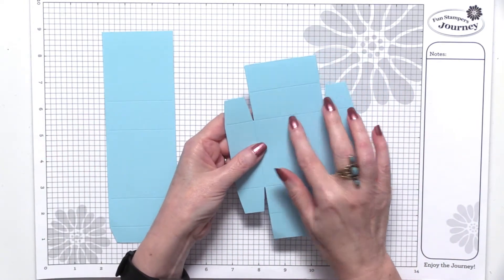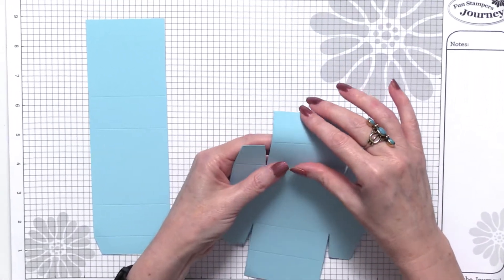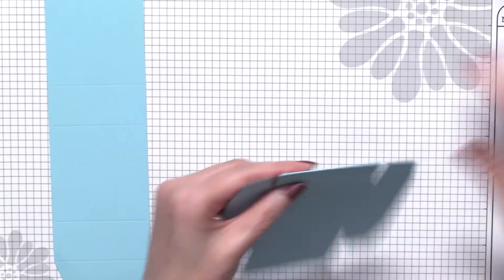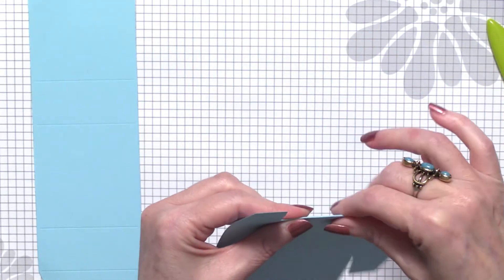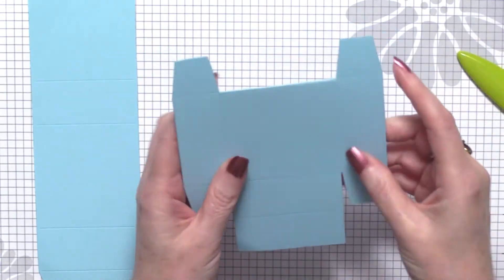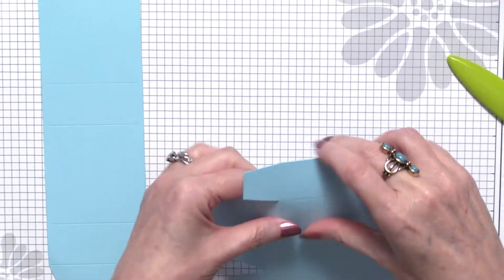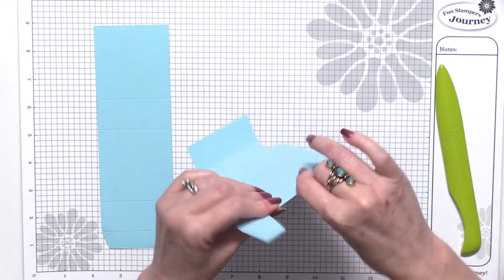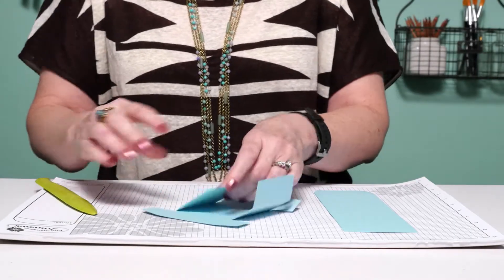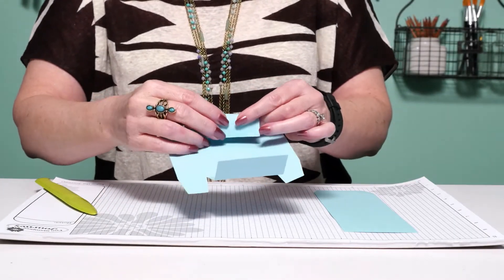Wherever you see a scored line is where you're going to want to make your folds, and I like to use our crease tool to get an extra crisp flat fold, which can be important when you're making boxes because you want to have your sides at a crisp 90 degree angle.